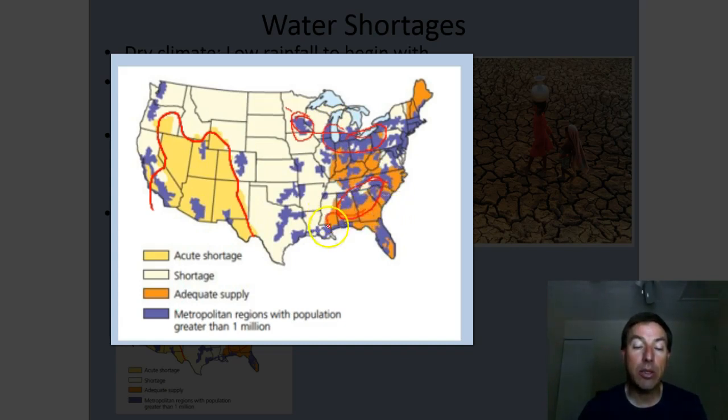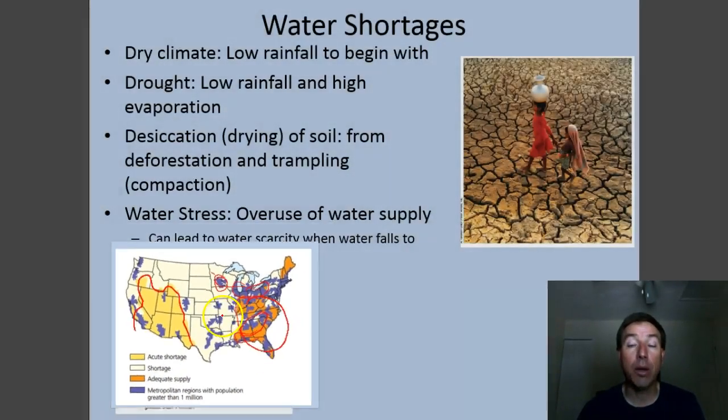However, when we get out of those, then we get to adequate. But only a little bit of the eastern or southeastern United States has an adequate water supply. Unfortunately, most of the country is overusing our water.